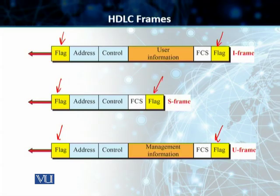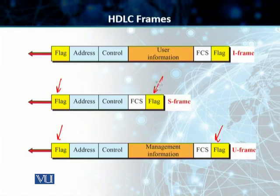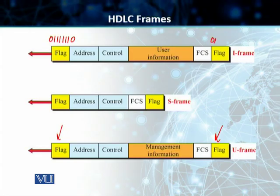Before we leave this slide, let's discuss what each of these fields does. The flag field contains a synchronization pattern that identifies both the beginning and end of the frame. Because HDLC is a bit-oriented protocol, this pattern is 0, 1, 1, 1, 1, 1, 1, 0 — and the same pattern is used for the ending flag as well.